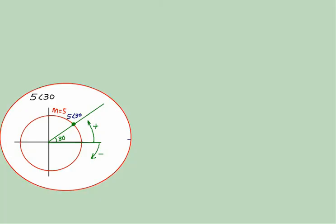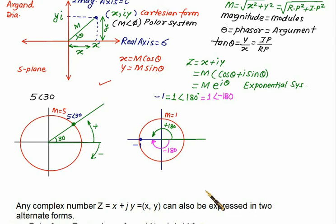If you want to locate 5 angle 30, you draw a circle of radius equal to 5 and construct anticlockwise positive 30 degrees. Where these two points will intersect, that point is represented as 5 angle 30.